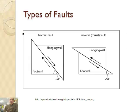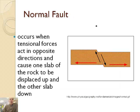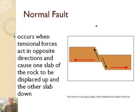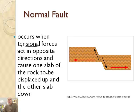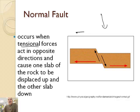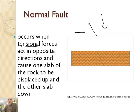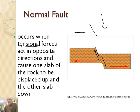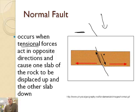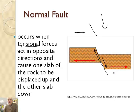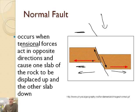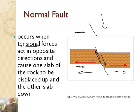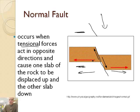There are several varieties of faults. For example, there's a normal fault and a reverse or thrust fault. A normal fault occurs when tension forces act in opposite directions and cause one slab of rock to be displaced up and the other down. Notice in the animation how the left side is being thrust up and the other is going down — the contact point is the fault line. It's really not an upward or downward force as much as a tensional force, which is causing the normal fault to occur.